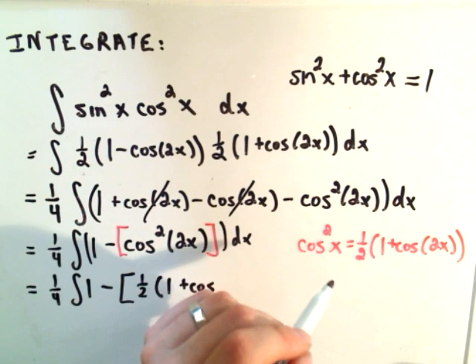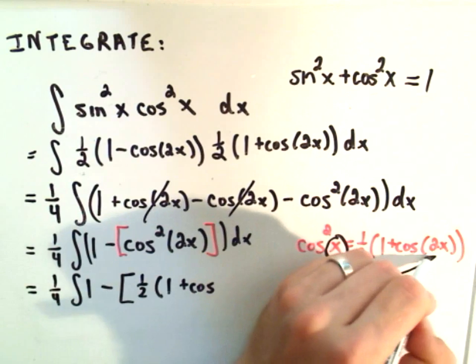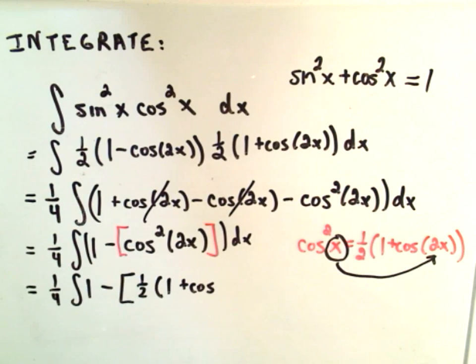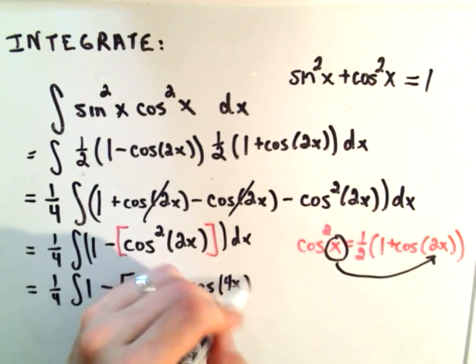If you think about this formula, whatever's inside gets doubled in the formula. You multiply it by 2. Since I originally had 2x, I'm now going to get 4x out.